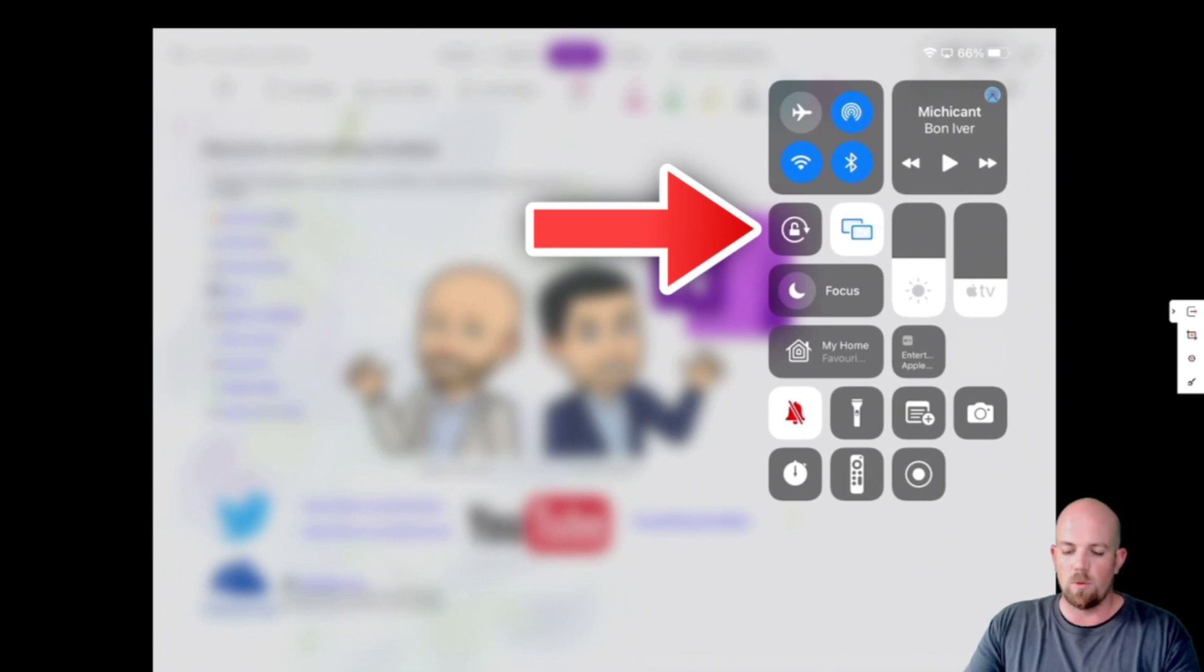And the one that we're looking for is near the top there under the Wi-Fi symbol, which is this little lock one. And basically all that's going to do is stop it from turning and keeps everything the way that you want the direction to be, which is normally landscape.